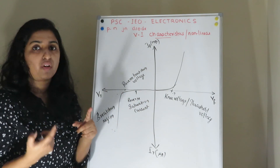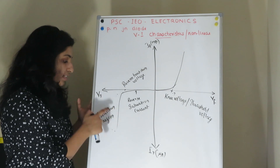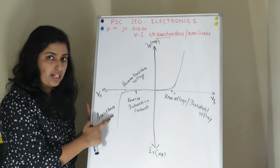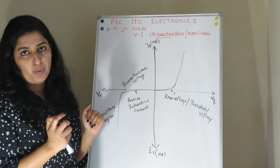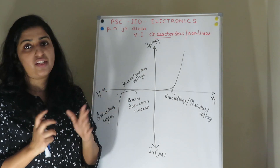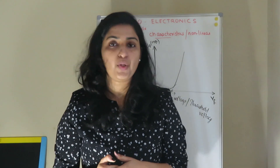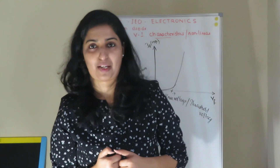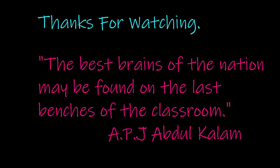At the reverse breakdown voltage, you get maximum current and enter the breakdown region — the diode breaks down. This is the VI characteristics of the PN Junction Diode. Please subscribe to the channel. Thank you.